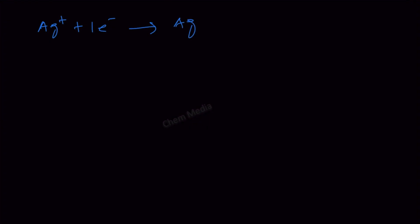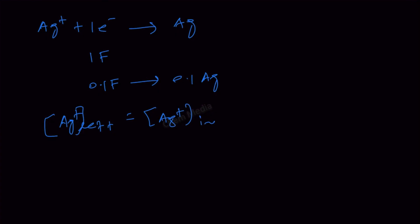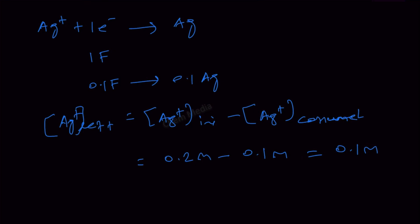Likewise, for Ag⁺ — if Ag⁺ gains one electron, it becomes Ag, and for that one Faraday is required. But how much are we passing? Only 0.1 Faraday, as given in the problem. So if we pass only 0.1 Faraday, we get 0.1 moles of Ag. Therefore, the concentration of Ag⁺ remaining equals its initial concentration minus the amount consumed: 0.2 molar minus 0.1 molar equals 0.1 molar. This is the value we should use in the Nernst equation — using the older values will give the wrong answer.